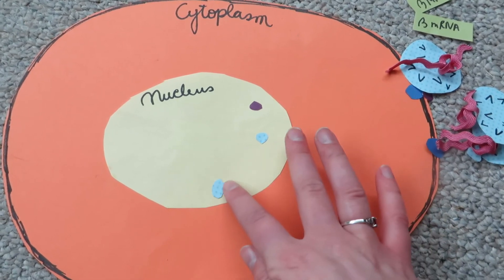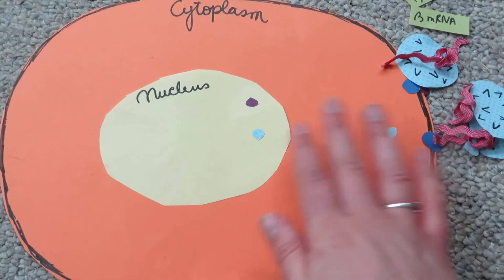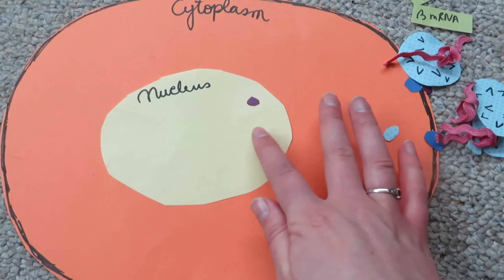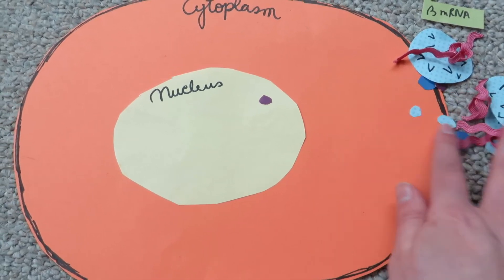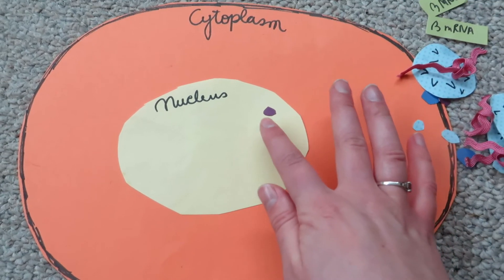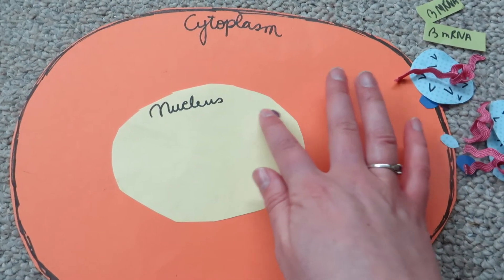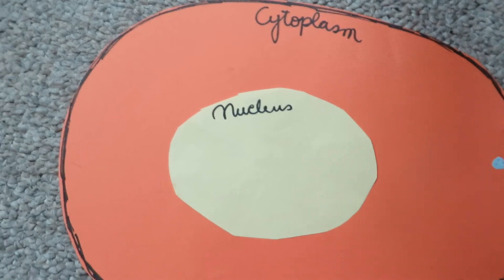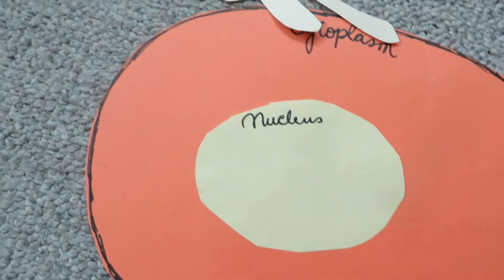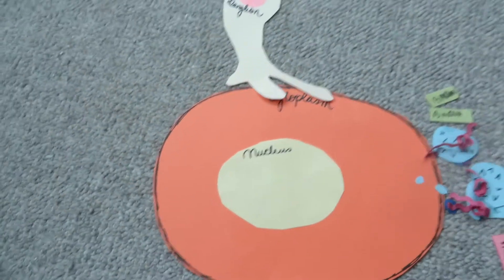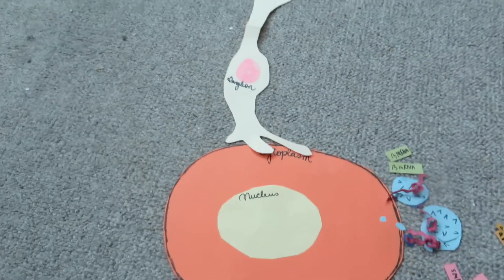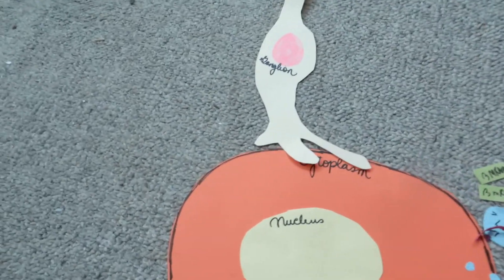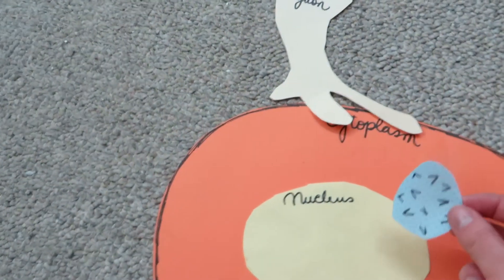The lytic cycle is when you have symptoms. When you don't have symptoms, that's the latent part of the infection — this is when the herpes virus crawls into a neighboring nerve cell.